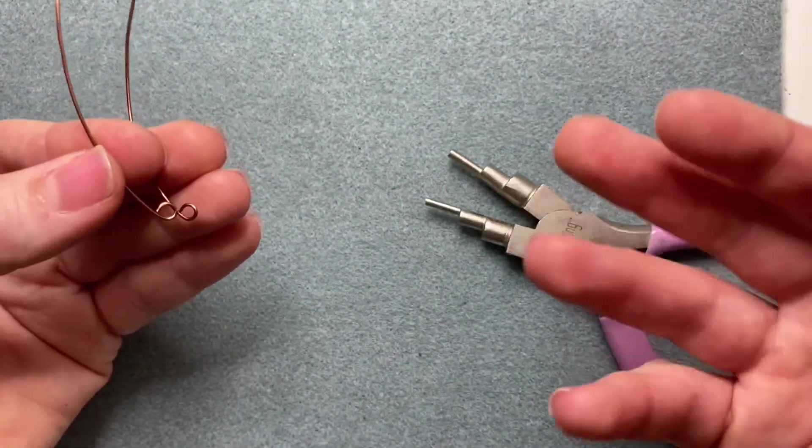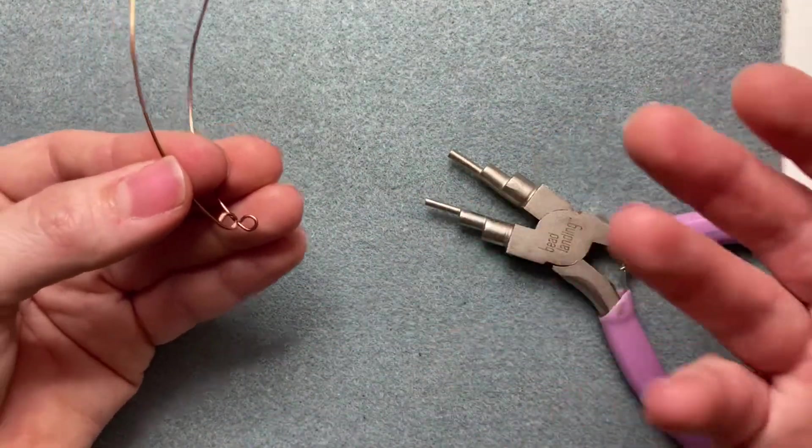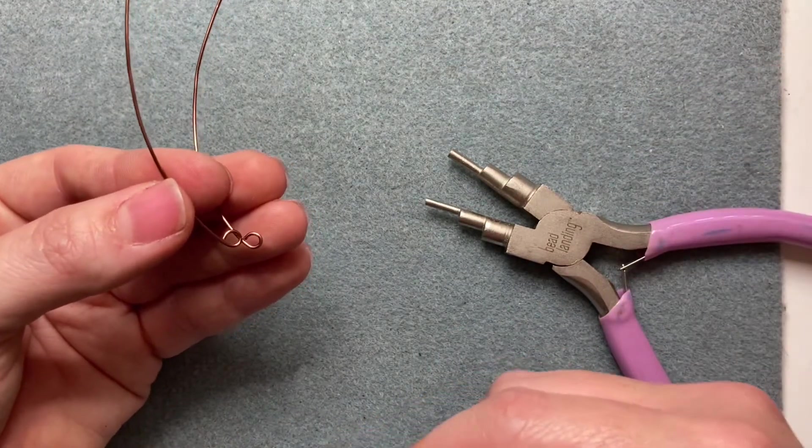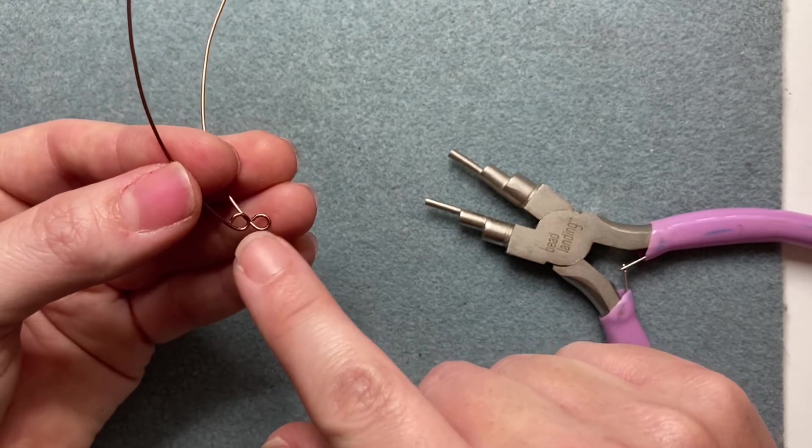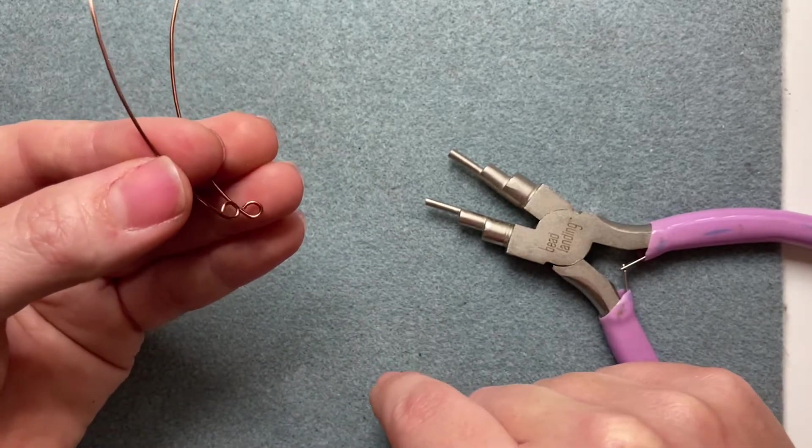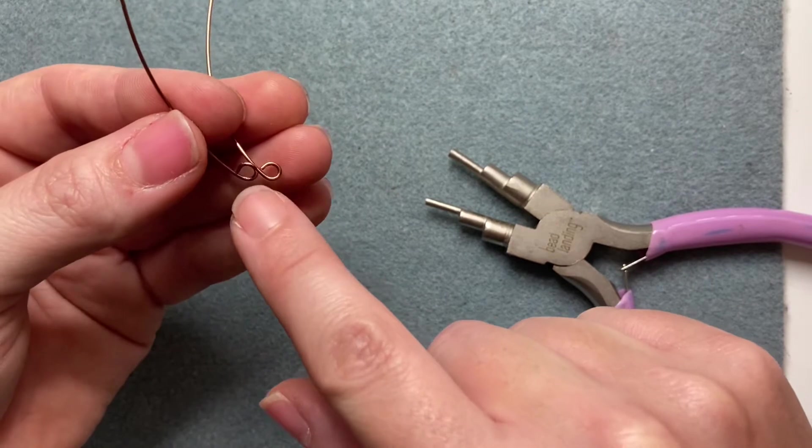So you have two pieces of wire with loops at the end. Now you can create larger loops, smaller loops. It really depends on your finished piece. This is the side that the earring actually hangs from, so I like to personally make mine a little bit bigger.